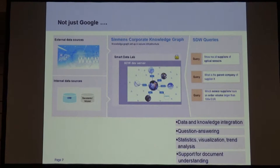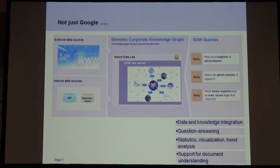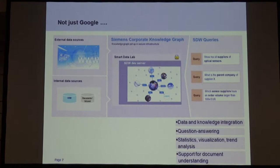It's not just Google — many companies are now starting to build knowledge graphs. We have an effort in a funded project: essentially a supply chain application where we want to characterize companies we might buy parts from — their price, size, quality, reliability — and link it to internal company data so you can ask questions like: show me all suppliers of optical sensors, what is the parent company of supplier X, or which sensor suppliers have an order volume larger than 100K euros. This technology is used in data and knowledge integration, question answering, statistics, visualization, trend analysis, and document understanding.